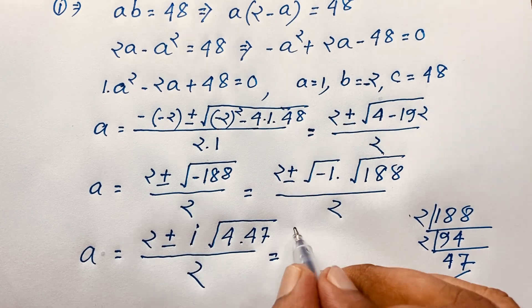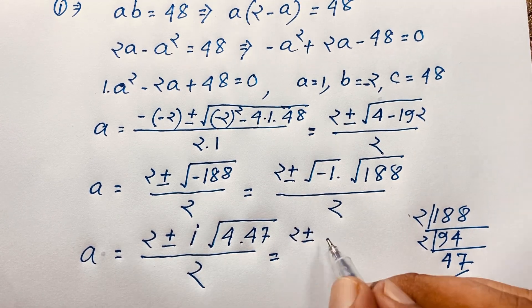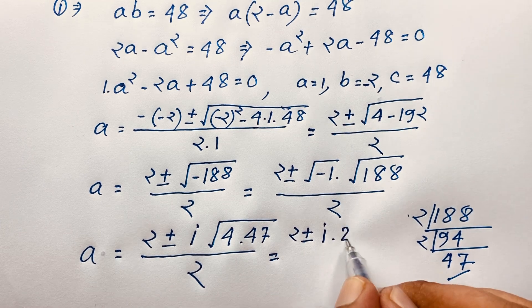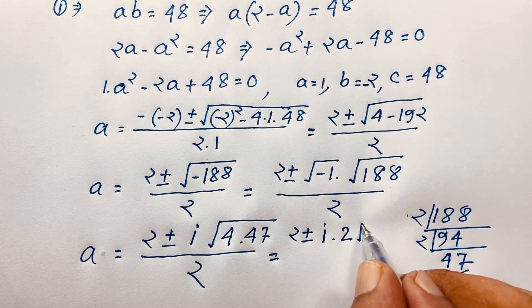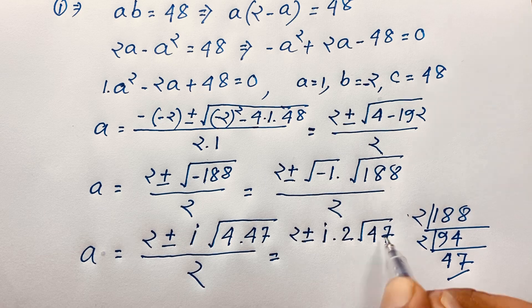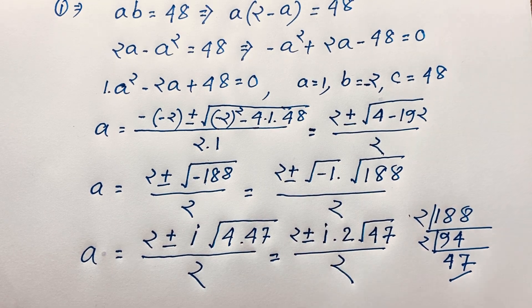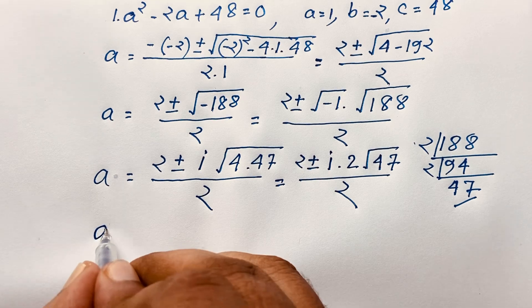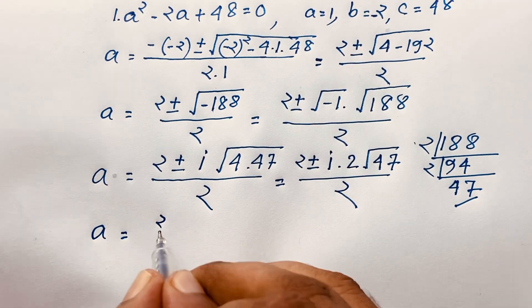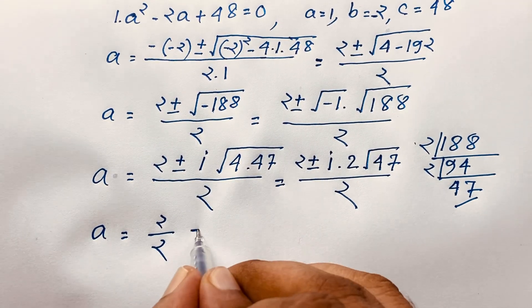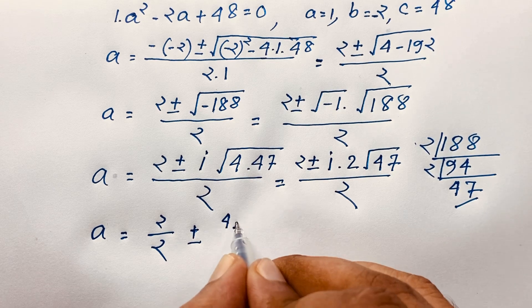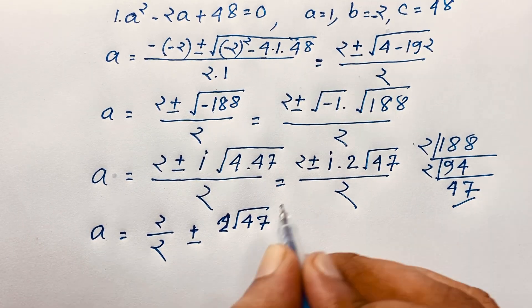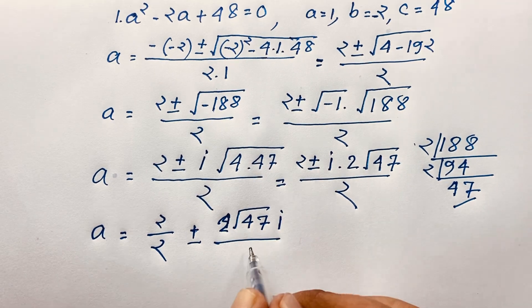This value becomes 2 plus or minus i times square root of 4, which is 2, times square root of 47, over 2. Separating the fraction, a equals 2 over 2, plus or minus 2 times square root 47 times i, over 2. The 2s cancel out, giving 1 plus or minus square root of 47 times i.